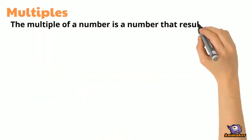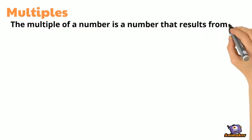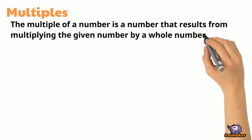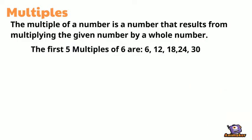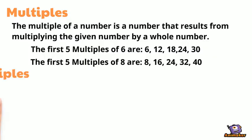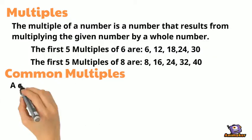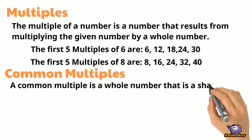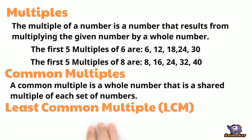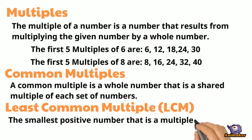The multiple of a number is a number that results from multiplying the given number by a whole number. A common multiple is a whole number that is a shared multiple of each set of numbers. Least common multiple is the smallest positive number that is a multiple of two or more numbers.